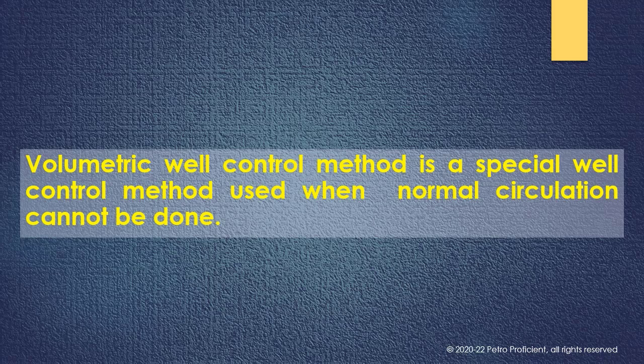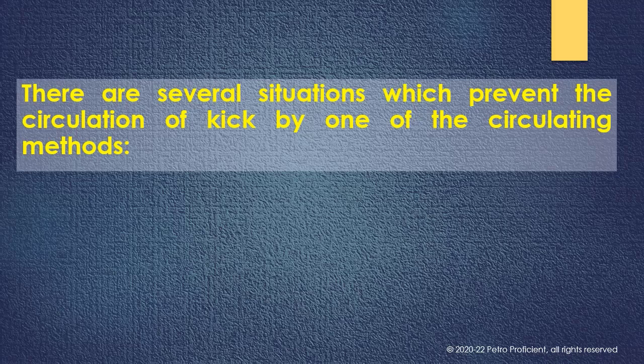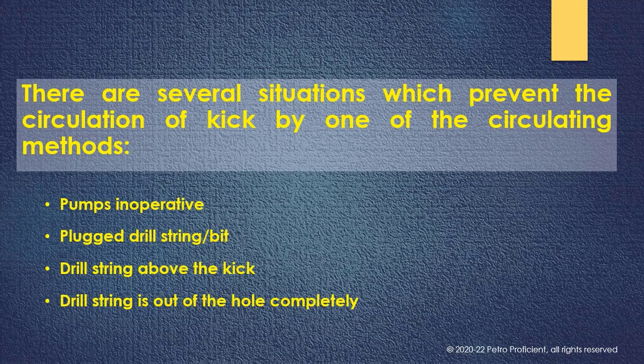There are several situations which prevent the circulation of kick by one of the circulating methods. They are: pumps inoperative, plugged drill string or a plugged bit, drill string above the kick, and drill string is out of the hole completely.